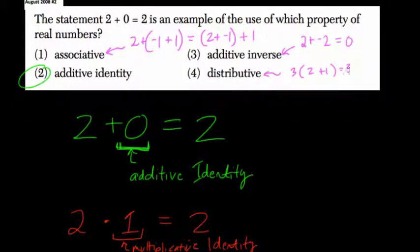But you could think of it as 3 times 2, so multiplying the 3 by the 2 over addition, plus 3 times 1. And that's the distributive property.